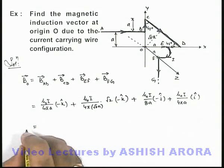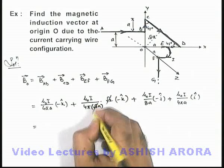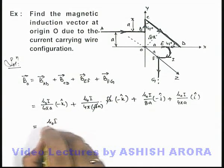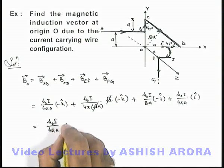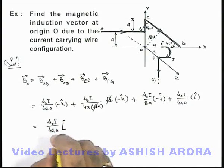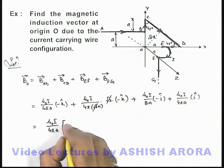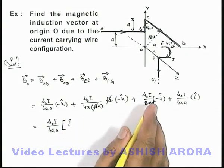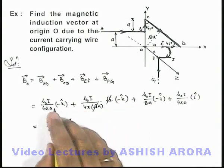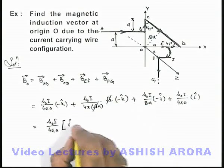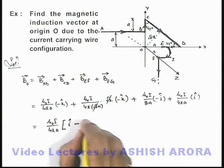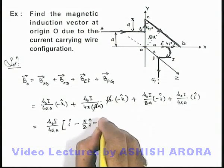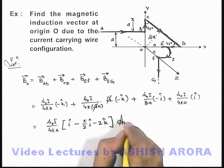Simplifying the result, the √2 terms cancel out. Taking μ₀i/4πa as common, the expression inside the bracket gives: î (from F-G), minus π/2 ĵ (from arc E-F), and minus 2 k̂ (from A-B and C-D combined). That is the final answer to this problem.